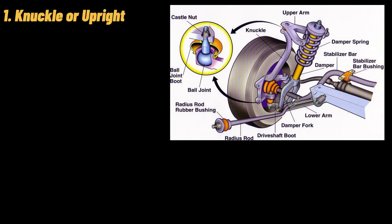1. Knuckle or upright. This is used to connect the wheels to the suspension system. It is mounted on the wheel's hub. The suspension system is connected to the linkages provided. The knuckle has a caster angle and a kingpin on the front wheels, which helps in steering the vehicle in the left or right direction.